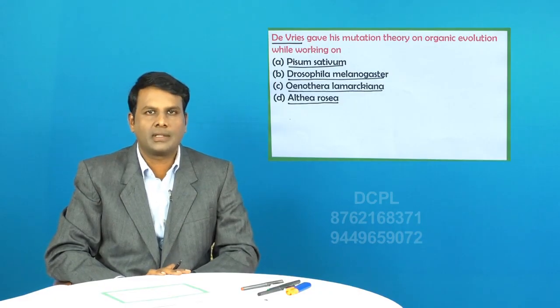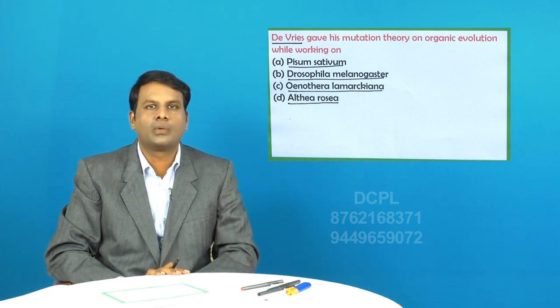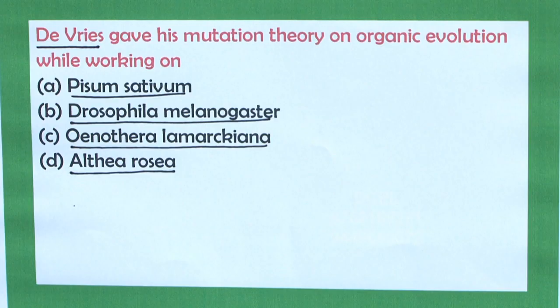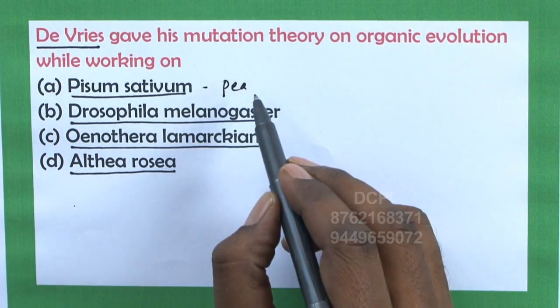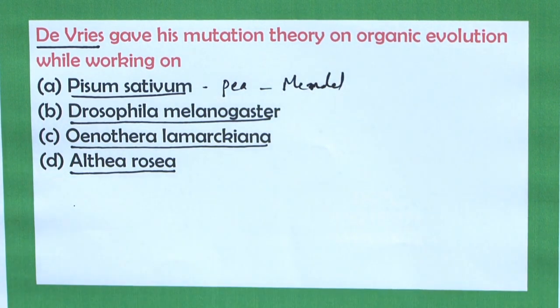De Vries proposed the mutation theory for evolution of organisms, and De Vries was also one of the three scientists who rediscovered Mendel's work. The question is: De Vries gave his mutation theory on organic evolution while working on. Option A is Pisum sativum — Pisum sativum is a pea plant on which Mendel worked and proposed his principles of Mendelism.